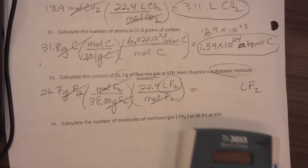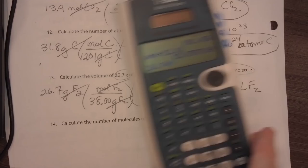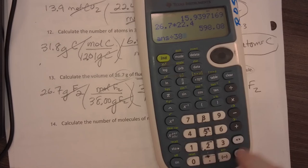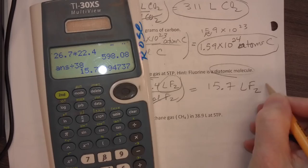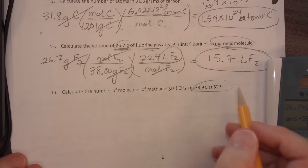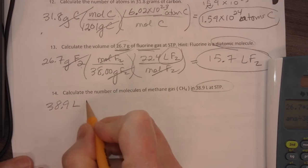So 26.7 times 22.4 divided by 38, and I get 15.738. I need three significant figures, so I will say 15.7. All right, the last problem on the page, I have 38.9 liters of methane gas at STP.